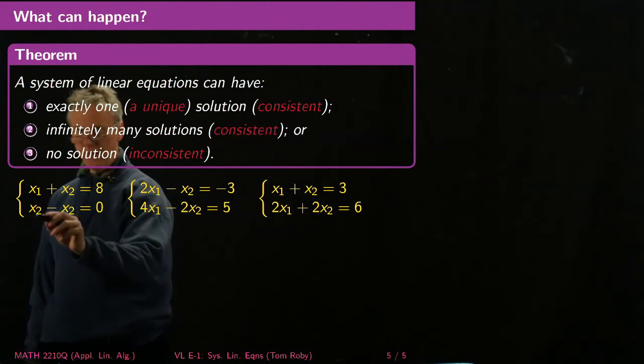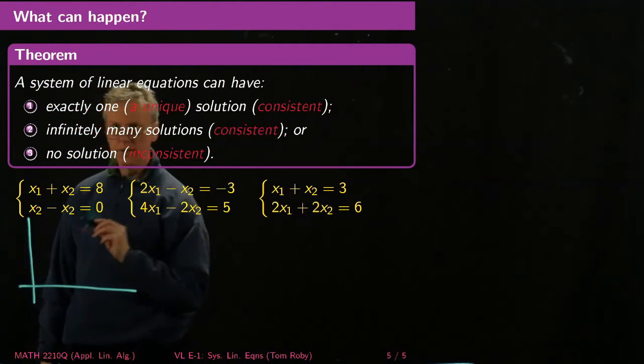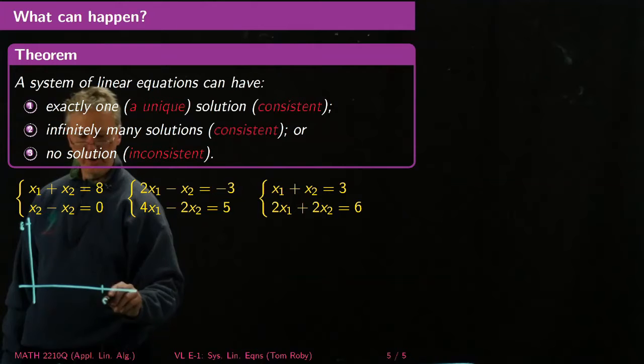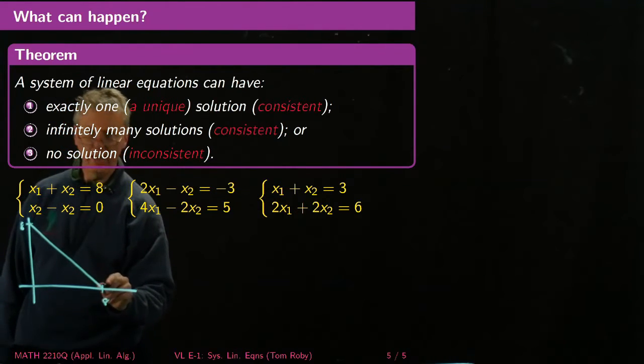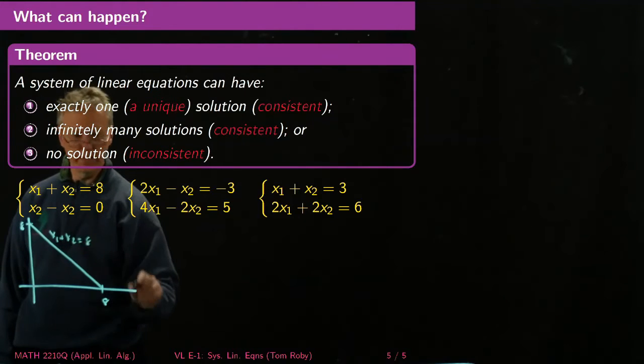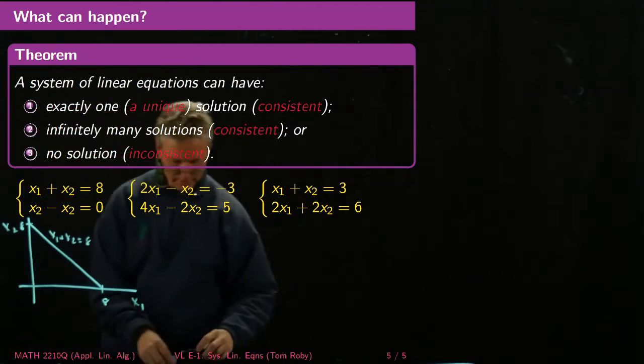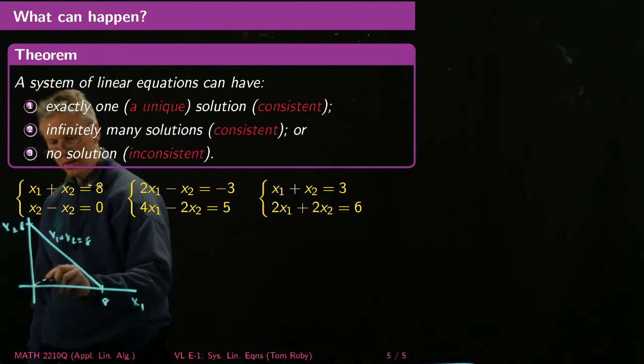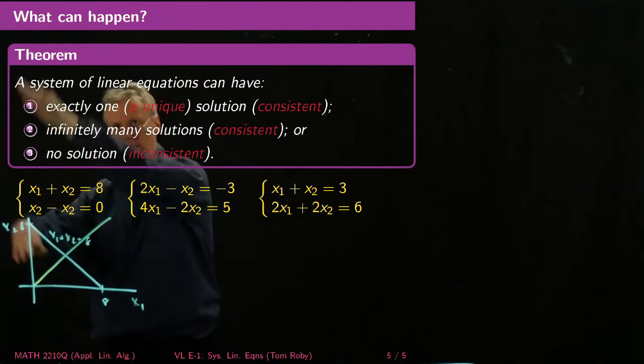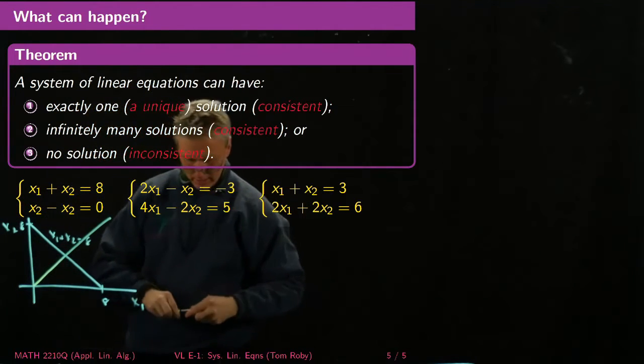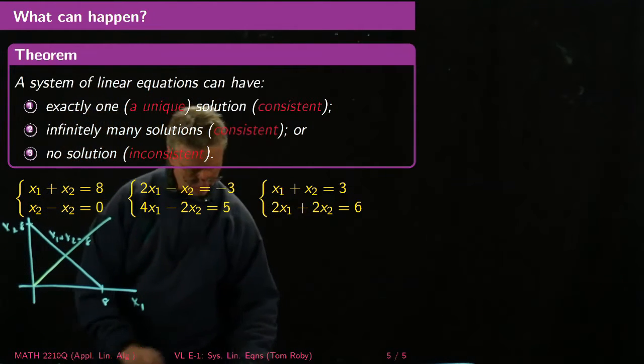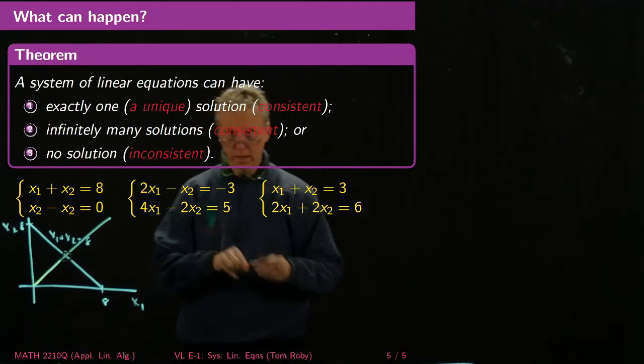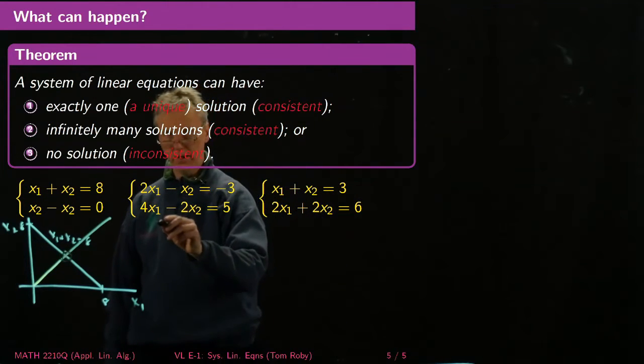So one way to think about these things graphically is to draw a set of axes and graph both of them. So x₁ + x₂ = 8 means that I could have 8 here or 8 here, and so I've got that equation, right? This is x₁ + x₂ = 8, x₁ axis x₂ axis. Now the other thing I might draw on there is x₁ - x₂ = 0. Well, that's just this line through the origin, right? I'm not drawing the whole line. Each of these lines goes on infinitely. But in this situation, we get one unique solution, which I'll highlight right here. That's the unique solution.